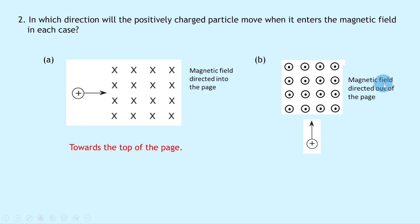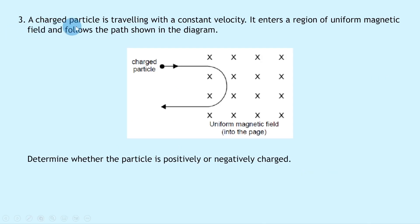In part b, the magnetic field is directed out of the page, shown by the dot within the circle, and the positively charged particle is moving upwards. Taking your index finger pointing out of the page and your middle finger pointing upwards, the thumb points to the left — just like in question one. However, since we have a positively charged particle, we reverse the direction, so the force is exerted to the right.